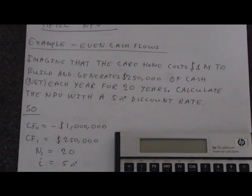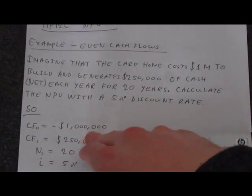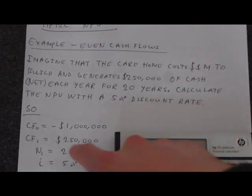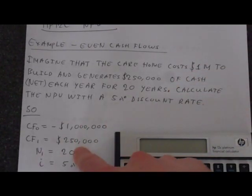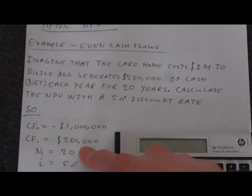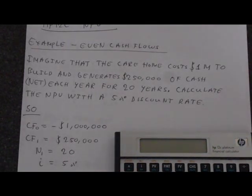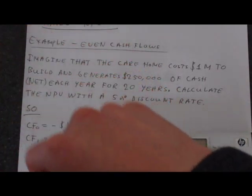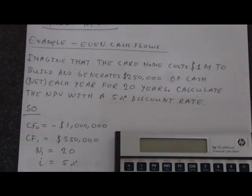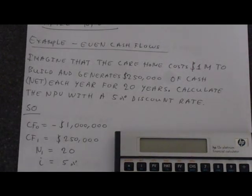Just extracting the information, which is quite simple to do. We're taking cash flow zero. That's our initial investment. This is a cash outflow, so we're making it negative. That's $1 million. Cash flow one, we're going to call $250,000. And we've got 20 of those. So we'll multiply this by 20 to make up our 20 cash flows. Or rather, we'll be storing $250,000 and then the number 20 beside it to say that we've got 20 of those cash flows all of the same value.